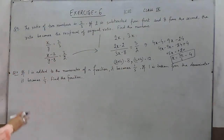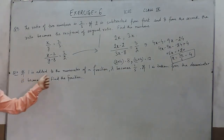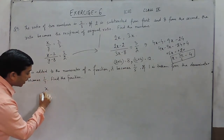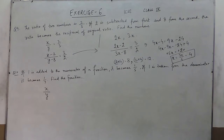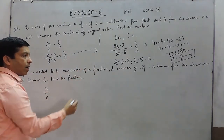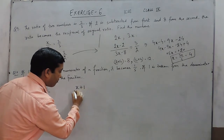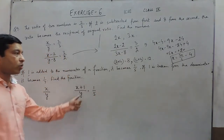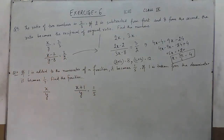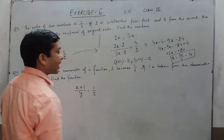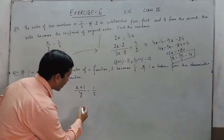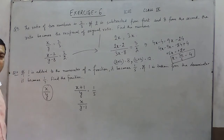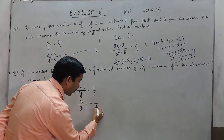In both methods we can solve it. Now we look at question number 10. If 1 is added to the numerator of a fraction it becomes 1 upon 5. Suppose we take the fraction as x upon y. It is given that when 1 is added the fraction becomes 1 upon 5, so this is the first equation with 2 variables. Now if 1 is subtracted from the denominator it becomes 1 upon 7, that is x upon y minus 1 is equal to 1 upon 7.